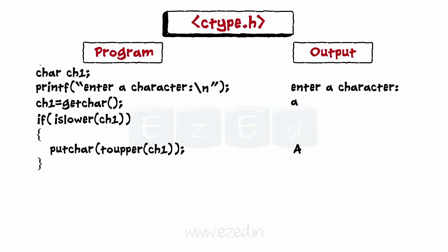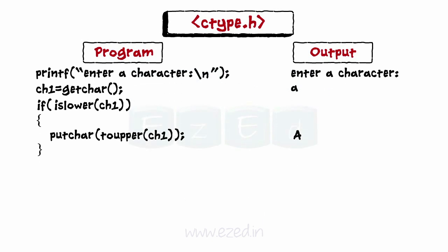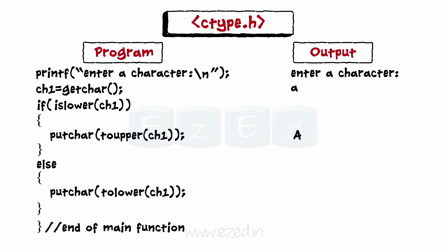putChar is used to display the character on the screen. Or if the character is not in lower case, then we move on to the else part, which transforms the character into lower case using the toLower function and places it on the screen using putChar.